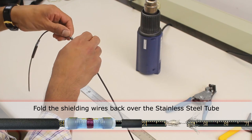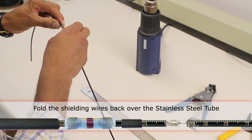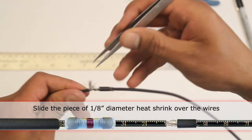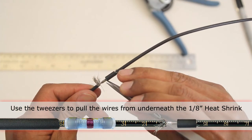Put the shielding back. Slide the piece of heat shrink over. Pull the shielding back using the tweezers. Make sure no shielding wire is left.